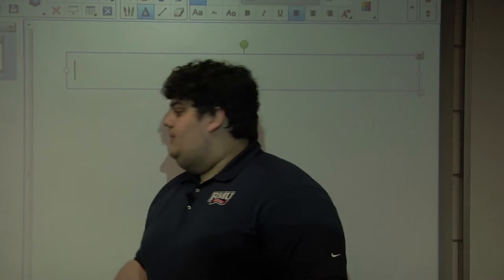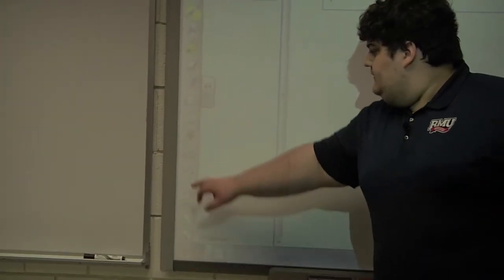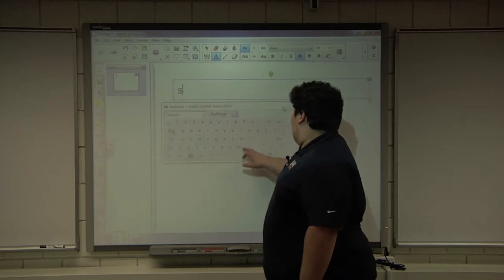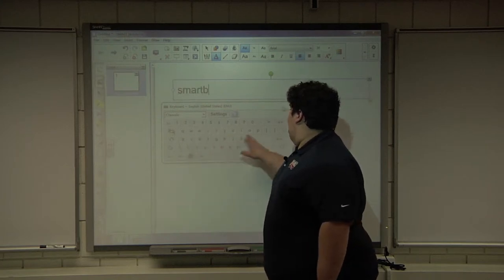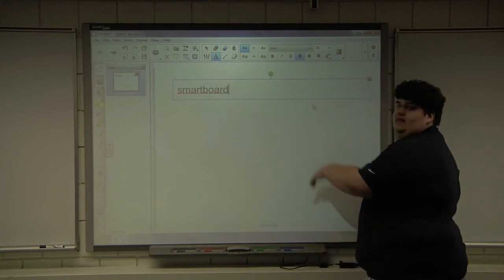And then to actually start typing on the text box there's two different ways to do this. Basically you're going to have to get the keyboard up. On the right here is an icon that looks like a keyboard. So I'll click on that. And it's going to bring up this keyboard we can use to enter text. So I'm going to type in smart board. Smartboard. And I exit out of that keyboard and I have that in there.